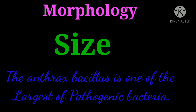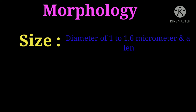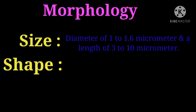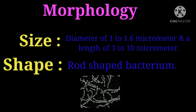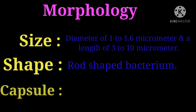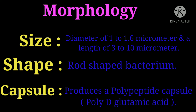Morphology and size: the anthrax bacillus is one of the largest of pathogenic bacteria. Bacillus anthracis has a diameter of 1 to 1.6 micrometers and a length of 3 to 10 micrometers. Shape: Bacillus anthracis is a rod-shaped bacterium.